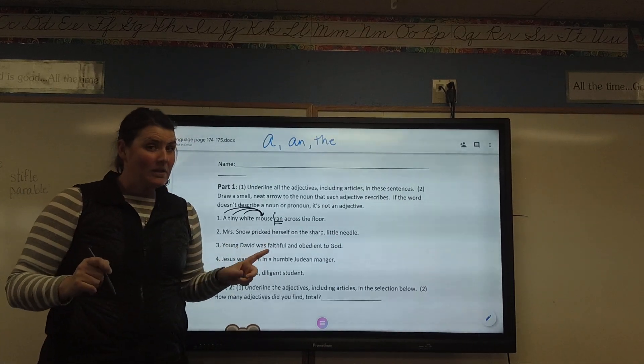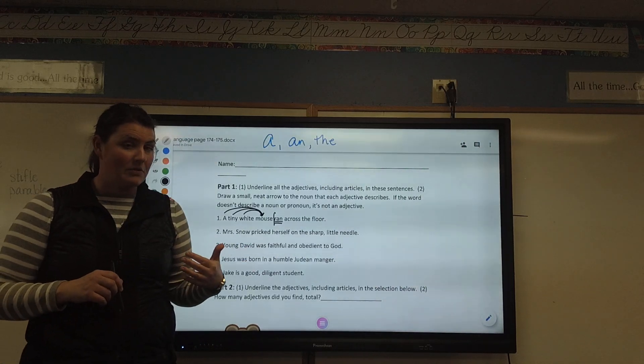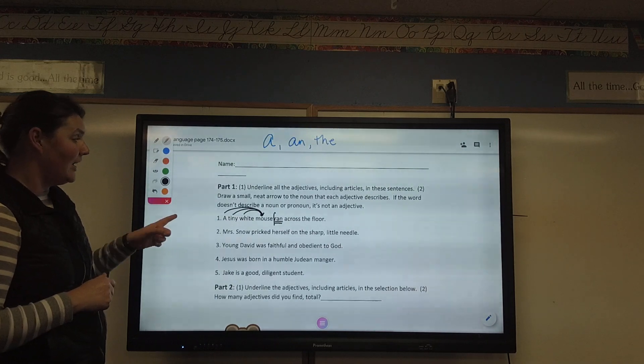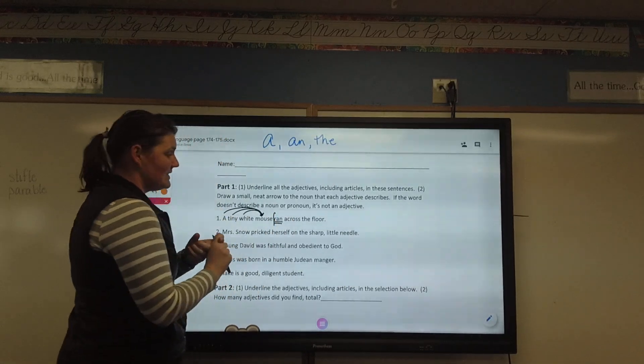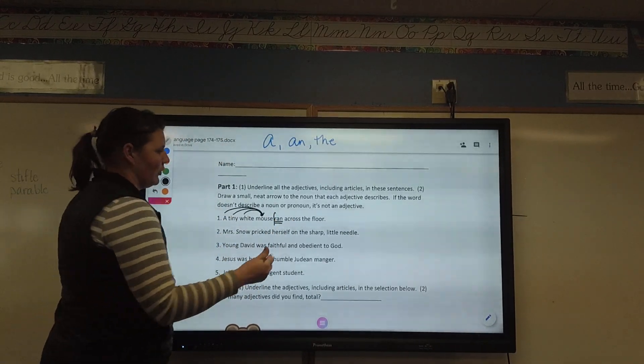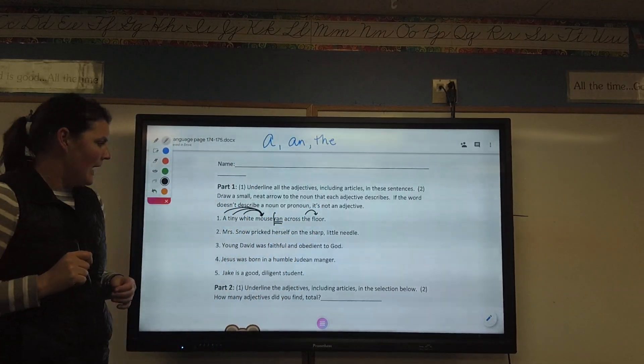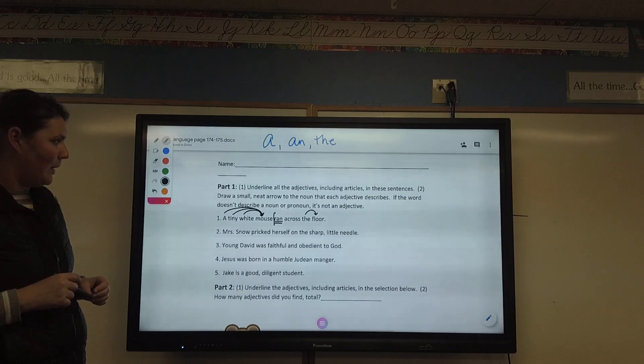Am I done? Well, not exactly because adjectives can show up anywhere in a sentence. So, we have to be really careful to look at the entire thing. Going on in a sentence, a tiny white mouse ran across the floor. It's either a, an, or the. So, I know that the is an adjective. And the is describing what? The floor. And I've got what I need for number one of part one.